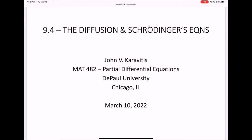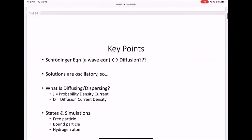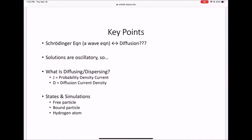Good evening, everybody. My name is John Karavitis, and I'm a graduate student here at DePaul. I'm working on my master's degree in physics. So I guess it would be sort of natural that I would choose this topic. Tonight's topic is the diffusion and Schrödinger equations. This is a topic from Chapter 9, Section 4.